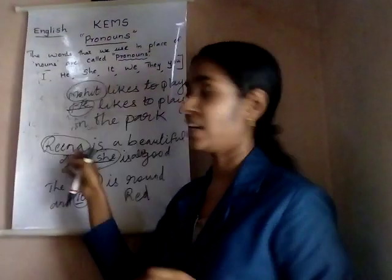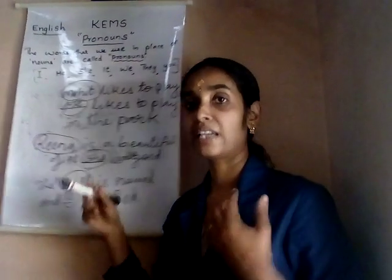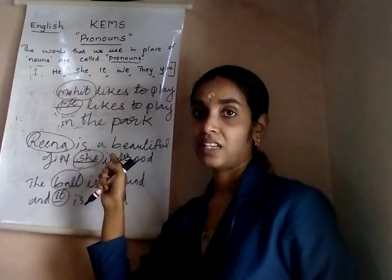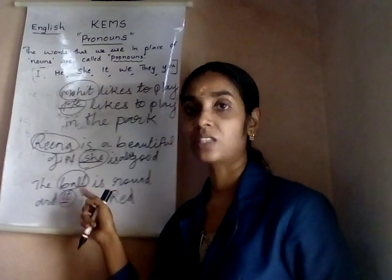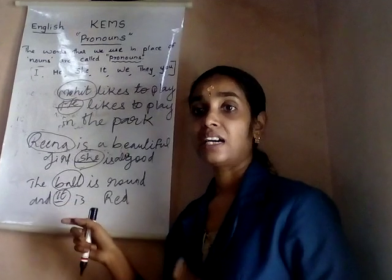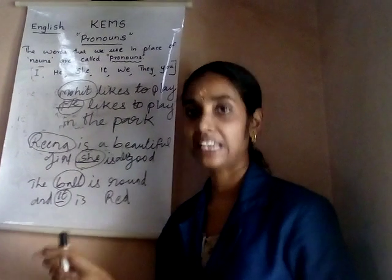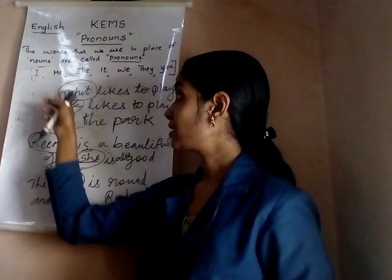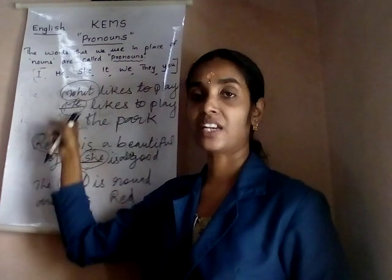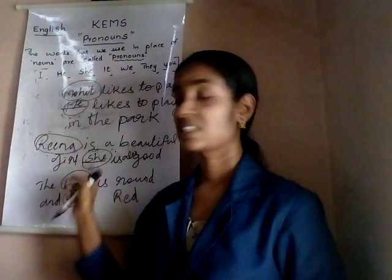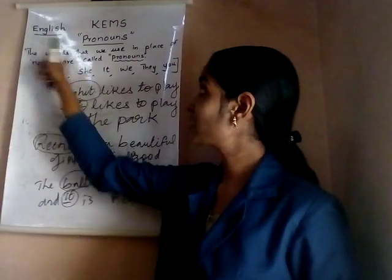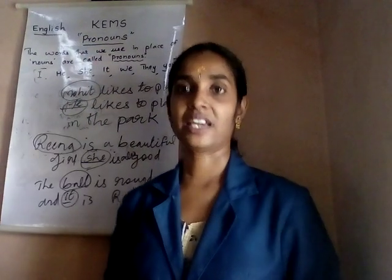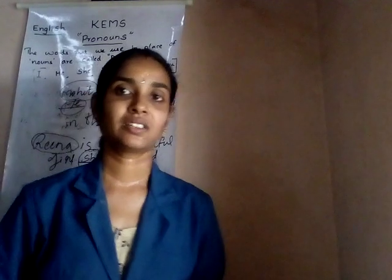We can use 'they' for many names or many things — like Mohit and Reena together, or the ball and the bat. In plural, we use 'they.' Name of a male person → 'he.' Name of a female person → 'she.' So pronouns are the words that we use in place of nouns. I hope all of you understood. Thank you.